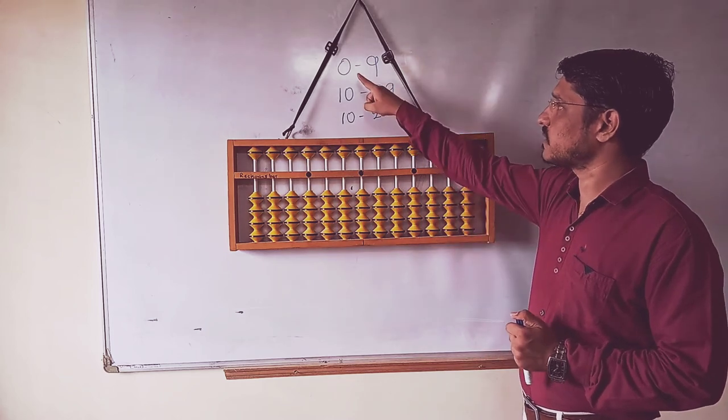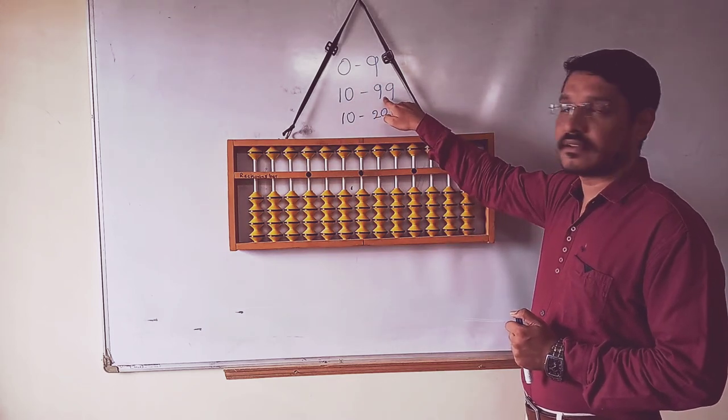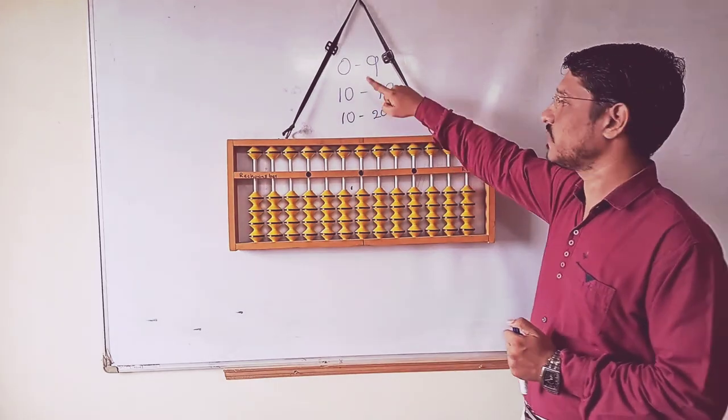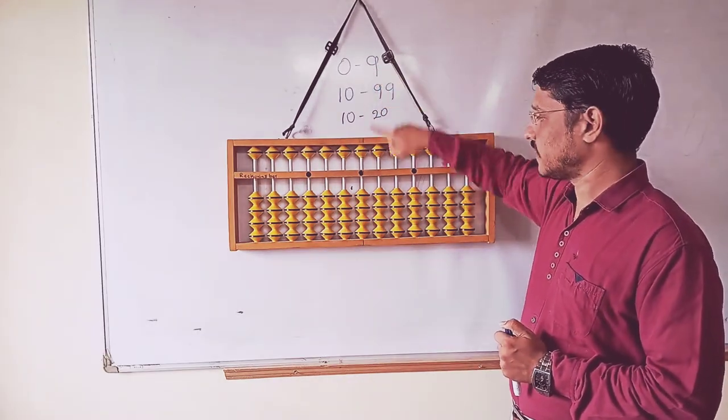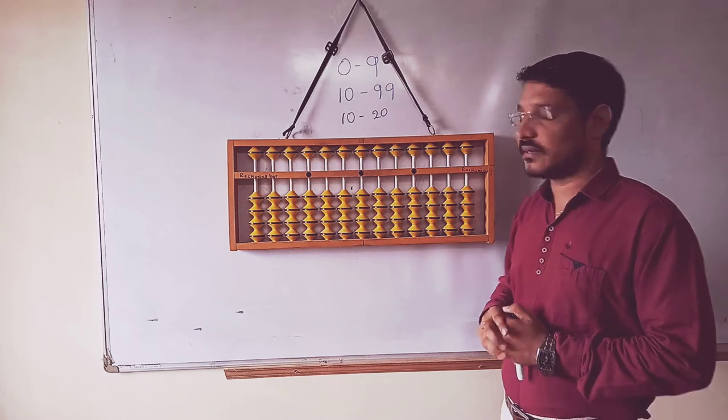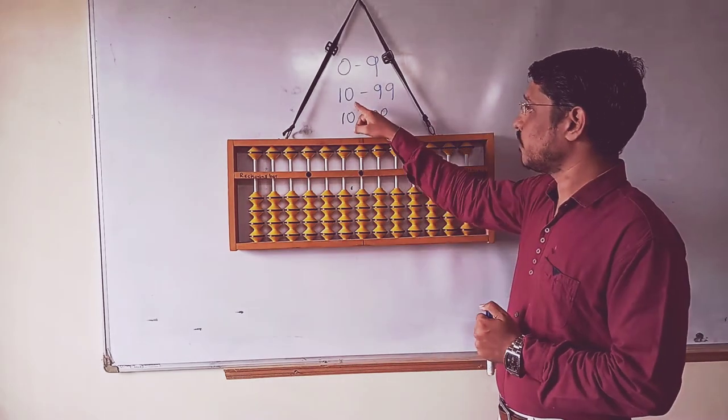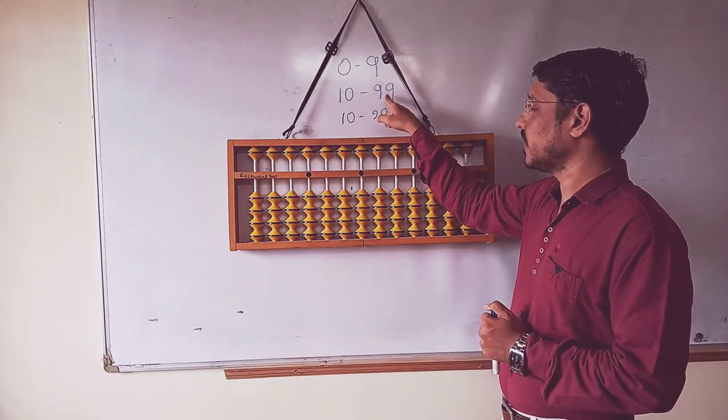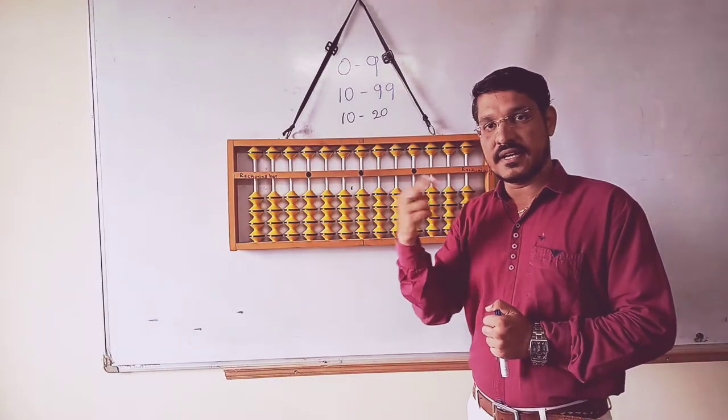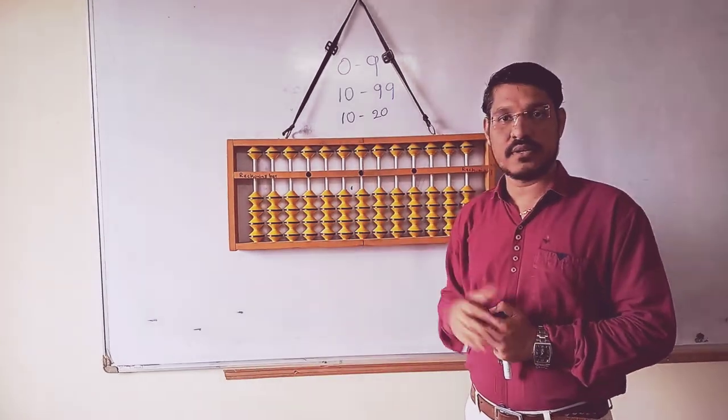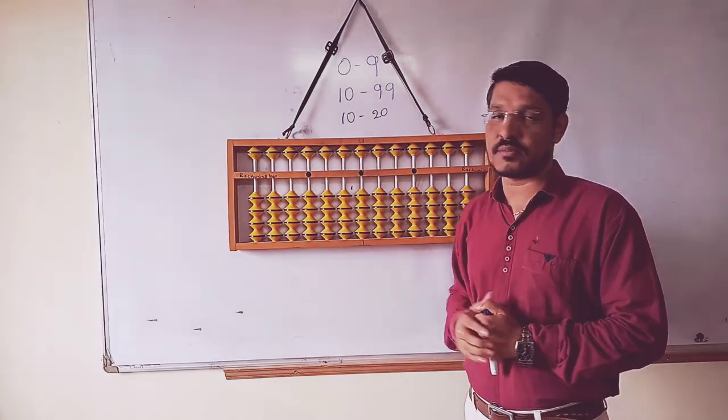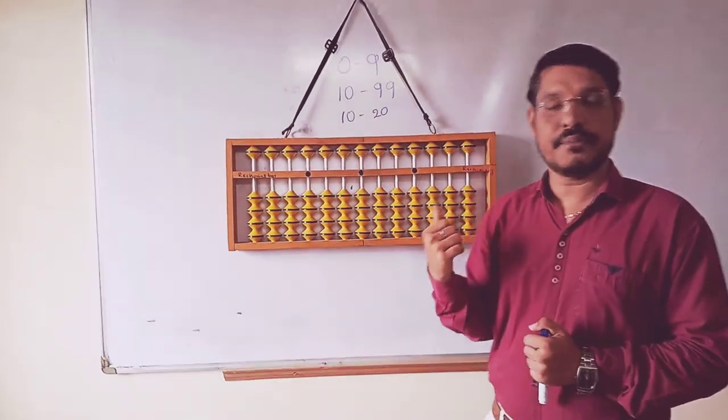Today we are going to discuss 10 to 99. In the last video, I discussed 0 to 9, that is single bar. Today I am going to discuss 10 to 99, which means double digits. I required last class only for one row. Now we are going to discuss one more row, that is 10 to 99.